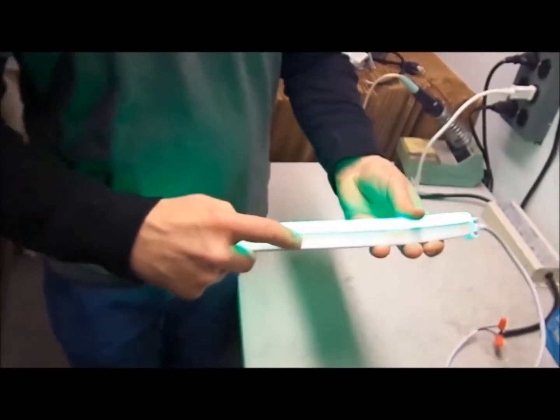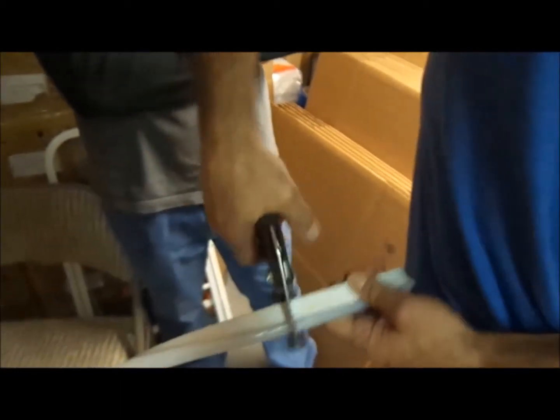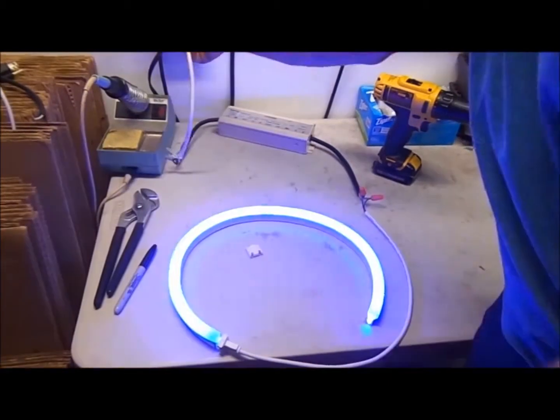DMX can be cut to size every 8 inches. There is a yellow line printed on the tape that will give you a general idea of where you can cut. Make sure you're unplugged when you're cutting and you want to get a clean square cut so that the connector kit goes on easily.